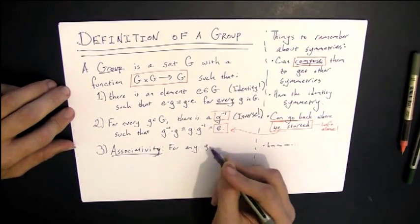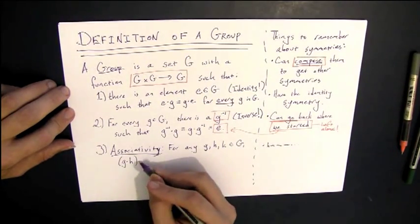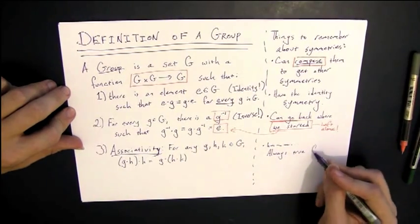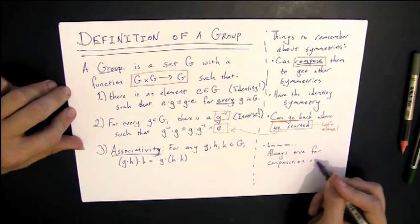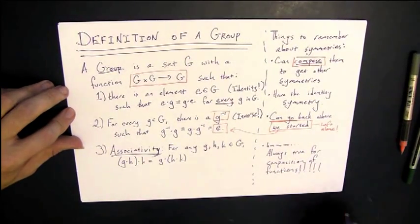And finally, we have associativity. And associativity says that if we have G, H, and K, it doesn't really matter the order in which we multiply them. The order of combination doesn't quite matter, so long as they're the same left to right. We can put parentheses however we want. And that's always true for composition of functions, so it will definitely be true for symmetries.